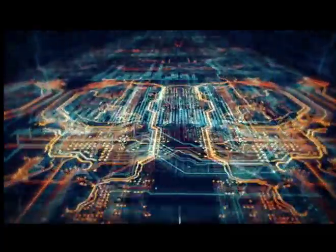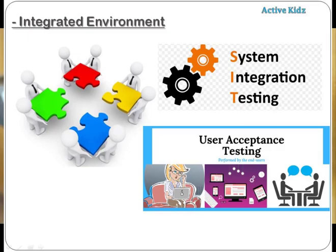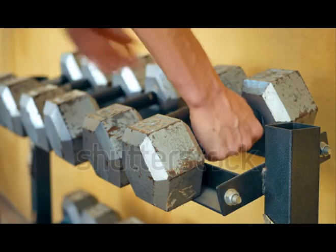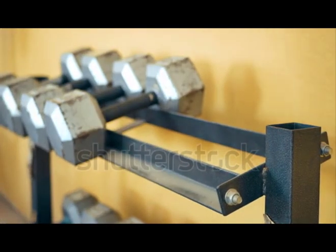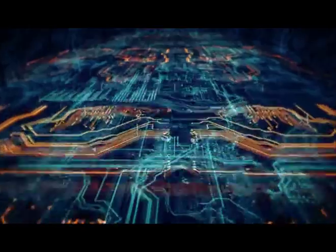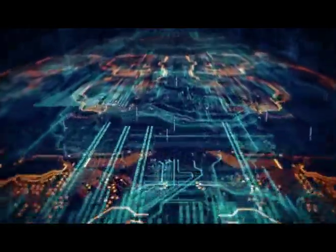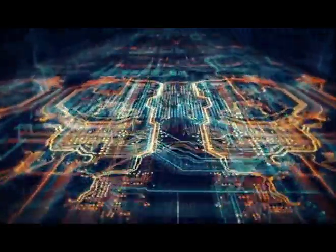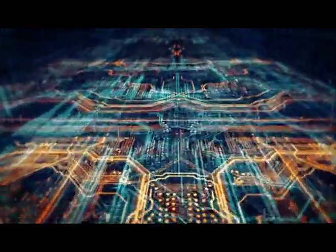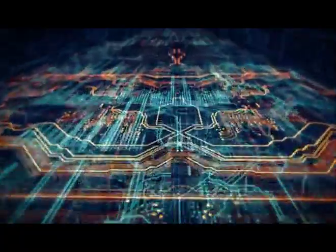In the integrated environment, we perform different kinds of testing: system integration testing (SIT), user acceptance testing (UAT), SVP testing — which covers performance testing and security testing — and production implementation verification. The production environment is also an integrated environment but of a different kind.